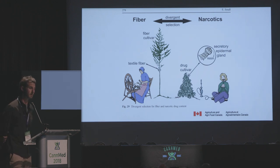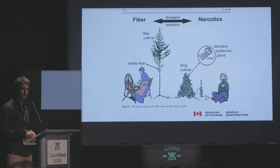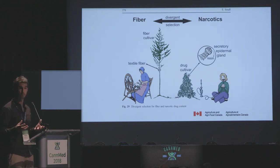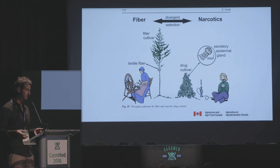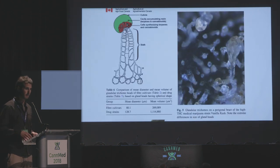Here's a paper from Ernie Small, which essentially illustrates what this means. On one side we have the fiber cultivars, and on the other the narcotic cultivars. The concept here is that there was divergent selection — selective pressures by the people who collected these plants and selected them for very different reasons — broadly, drug cultivars versus hemp cultivars.